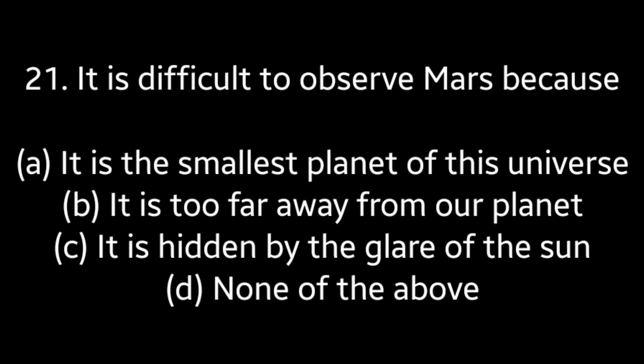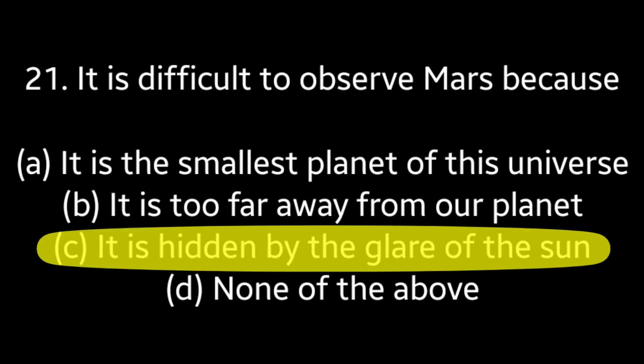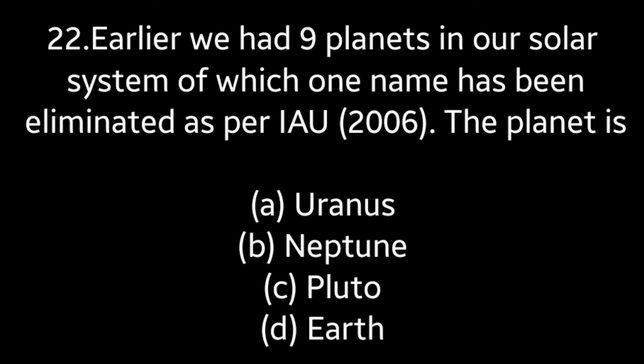Question number 21: It is difficult to observe Mars because — it is the smallest planet of the universe, it is too far away from our planet, it is hidden by the glare of the sun, none of the above. Answer is option C — it is hidden by the glare of the sun.